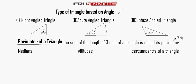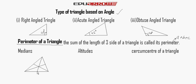Now we read about the median. Take any vertex and join it to the midpoint of the opposite side. Then take another vertex and again join it to the midpoint of the facing side. The midpoint of side AB, the midpoint of side BC, and the midpoint of side AC — where every line cuts each other is called the median. It is represented by the capital G.